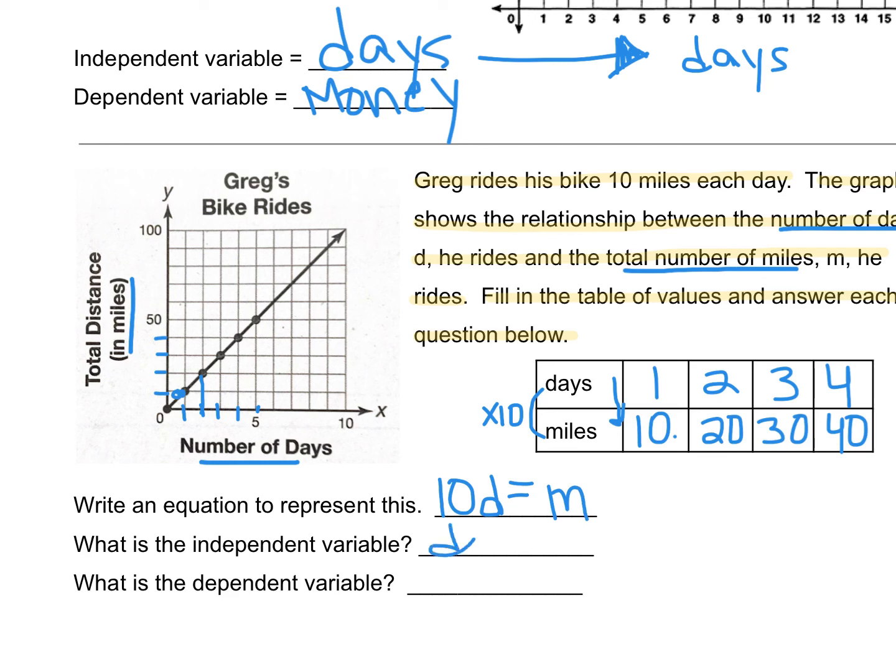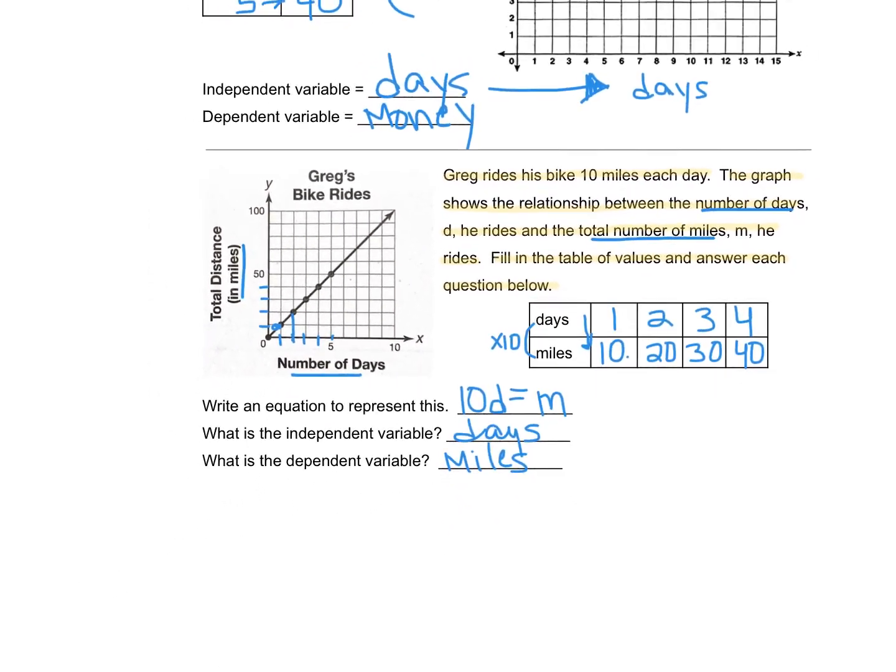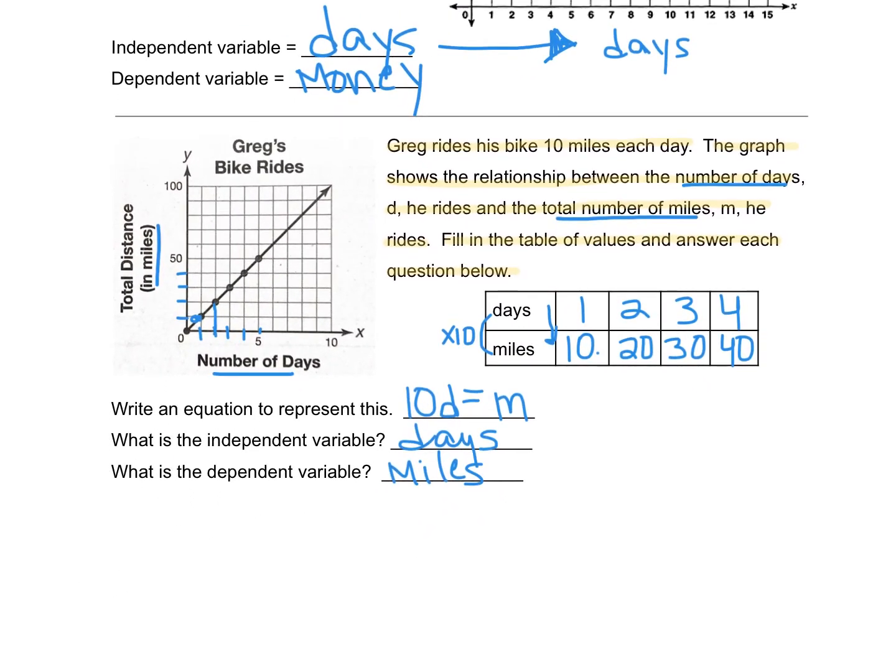Our independent variable will be the days. The dependent variable are the miles. The more days he rides, the further he's going to go, or the more miles he will ride. So the distance depends on the number of days.